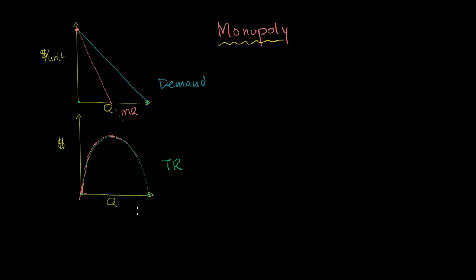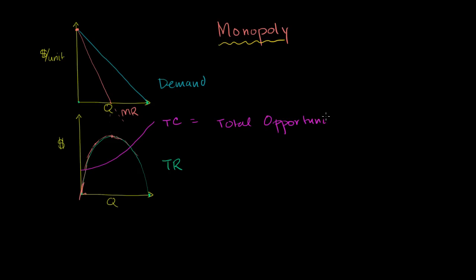If we're going to maximize profit, we need to think about what our costs look like. Let me draw our total cost curve in magenta. Total costs look something like this. When we have 0 units, all costs are fixed costs. As we produce more and more units, variable costs start piling on. When we're talking about costs and profit in economics, remember, you should view it in terms of economic profit — meaning total costs are total opportunity costs, both the explicit costs you're paying for and the implicit opportunity costs.